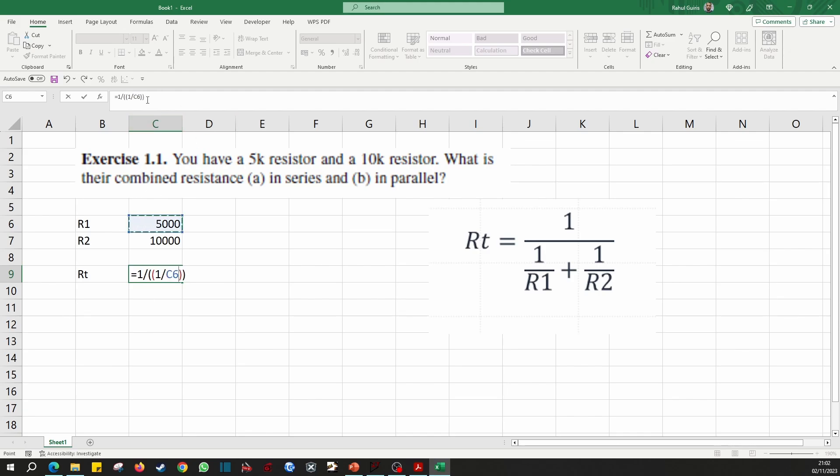And plus 1 divided by cell C8, which is R2. And calculate that to be equal to 3,333 ohms. We can also verify this on simulation.